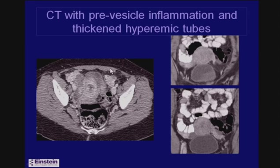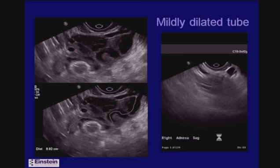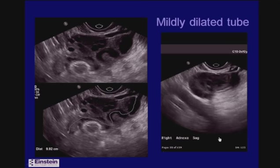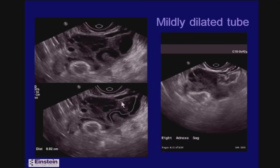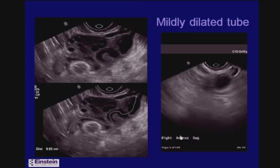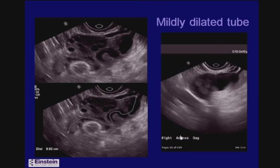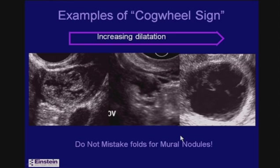Often better seen on CT is slight inflammation in the pre-vesical space. In coronal reformats, here is the uterus with one fallopian tube on each side. As the tube becomes more dilated it's easier to see, and in the cine clip you can see the tube winding around, curving back on itself, next to and separate from the ovary, which is quite normal.